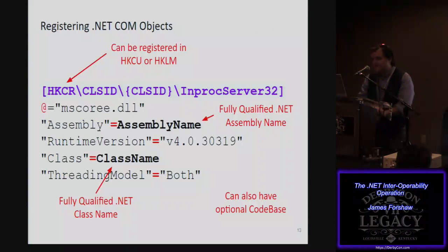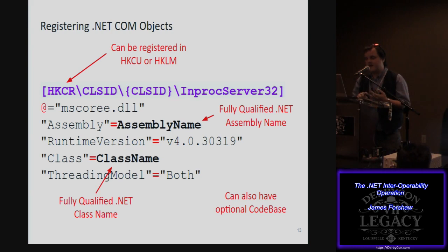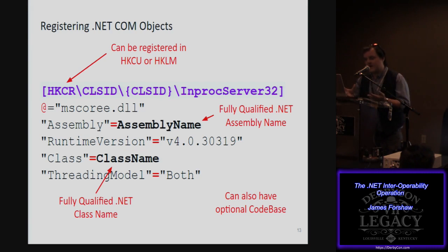Registration is basically COM registration — you register an in-process server in the registry. You don't register the DLL directly; instead you register mscoreee.dll, which is a bootstrap for .NET in COM. In that registration you also include the fully qualified assembly name, the class name you want to load, and an optional code-base attribute if you want to load the assembly from a file path instead of the global assembly cache, since registering in the GAC requires admin privileges.